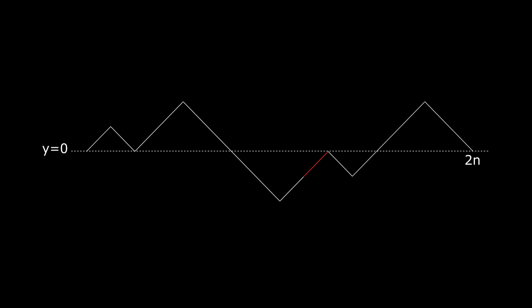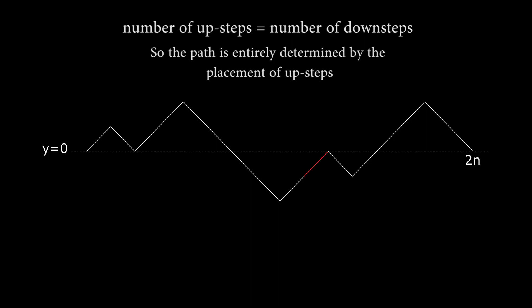Consider a path just like the ones described earlier, except remove the restriction that the path must stay above the line y equals zero. But it still must start and end on that line. How many of these paths are there of length 2n? Since the path starts and ends on y equals zero, then there must be the same number of up steps as there are down steps. And the path will be entirely determined by the placement of its up steps since we know the remaining steps must be down steps. So since the path has length 2n, we know exactly n of these will be up steps, and we can choose to arrange them however we like to form a unique path. So the number of unique paths of length 2n will be 2n choose n.